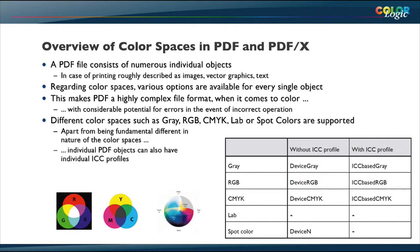Thinking about a PDF file, there are a lot of color spaces supported for all kinds of objects. For printing we have images, vectors, and text. Depending on whether a color object has an ICC embedded, it is called ICC-based — gray, RGB, CMYK — or just device gray, device RGB, device CMYK. Or it could be a spot color, which is then a device N.